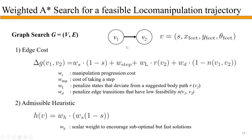Our edge costs penalize lack of progression, taking too many steps, and deviations from suggested body paths. For instance, treating the biped as a mobile robot gives a good guess for the body path. When using the neural network, instead of performing an IK configuration trajectory to check feasible vertices, we use the classifier to prune infeasible vertices and penalize edge transitions with low feasibility. The A* heuristic encourages the manipulation variable S to reach 1 as fast as possible to obtain suboptimal but fast solutions.